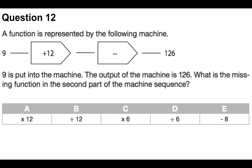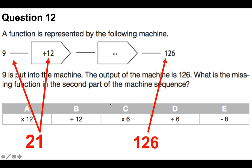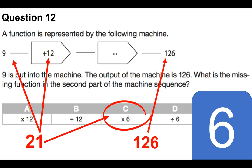Question number 12. Here's one. A function is represented by the following machine. So we've got 9 here plus 12, and the answer is 126. So 9 is put into the machine. The output of the machine is 126. What is the missing function in the second part? We're looking for that part there. We're given 9 plus 12, so that would be 21. And then we've got the answer 126, so what we'd have to do is work out from the five options A, B, C, D, or E. 21 times 12 is not 126. 21 divided by 12 is not 126. 21 times 6 is 126, so the correct answer is C, which is times 6.